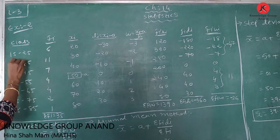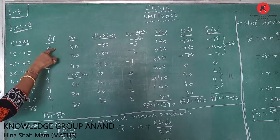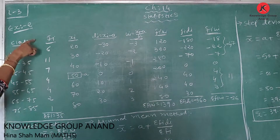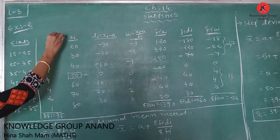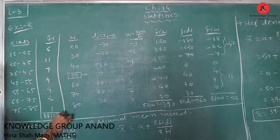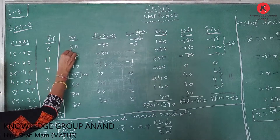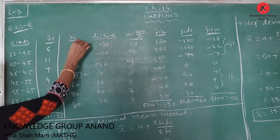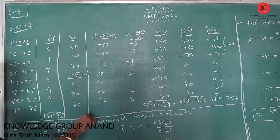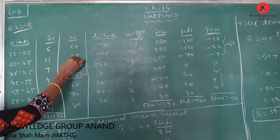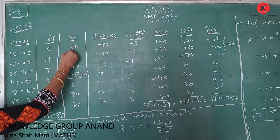Now we have a new class starting at 15-25, with frequencies given. Both columns — class interval and frequency — are given. We write the class interval in the first column and frequency fi in the second column. Now we find xi, the class mark.